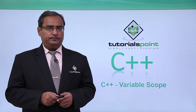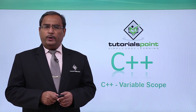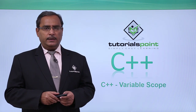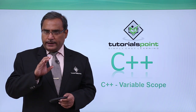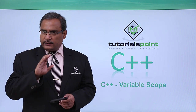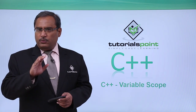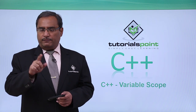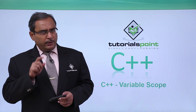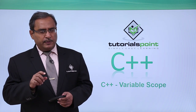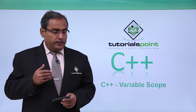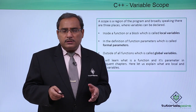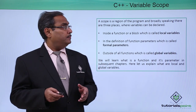C++ variable scope. Whenever we define a variable in a C++ program, that variable will be defined in a certain scope. If we want to access that variable from the same scope, the variable will be accessible. If we want to access the variable from some other scope, then the variable will not be accessible.